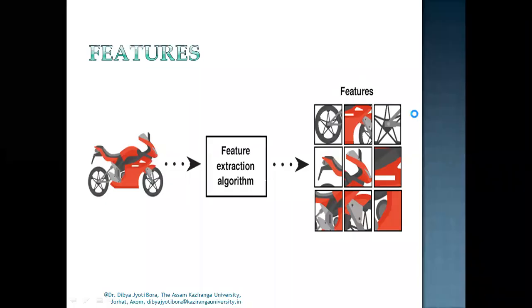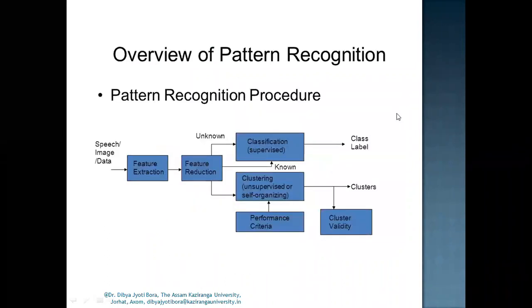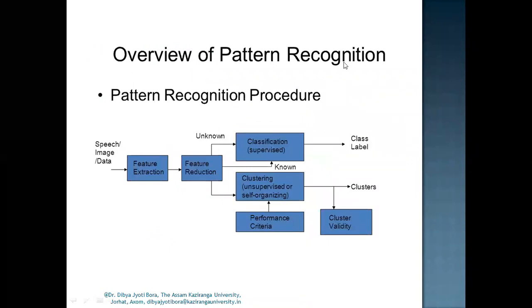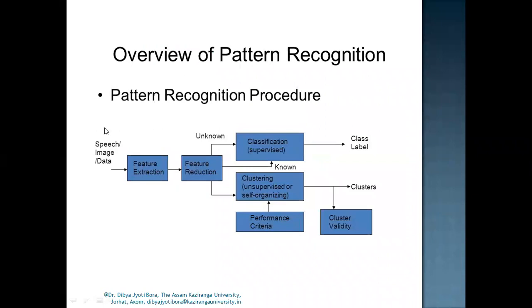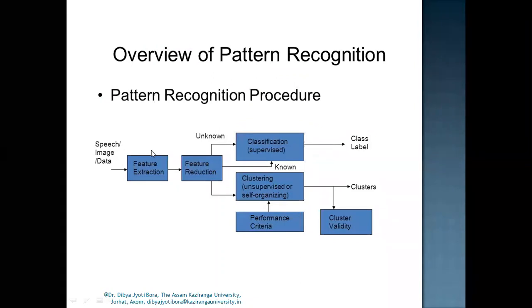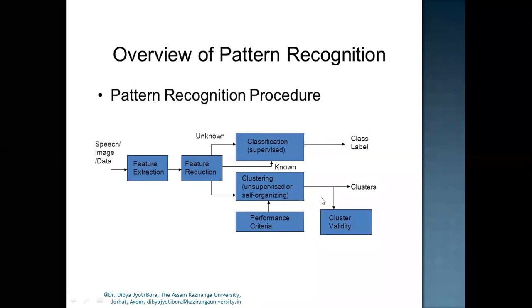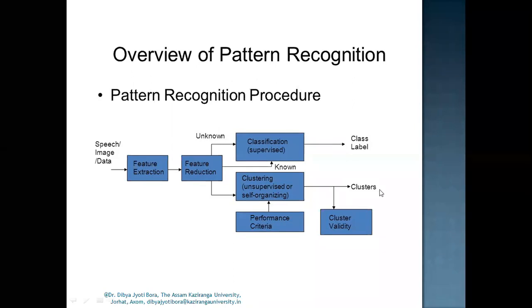So in the last lecture we have seen an overview of pattern recognition process, right? This means how the process of pattern recognition is carried out, what are the steps involved. Beginning from the input data, we have seen that speech, image, data - basically we are dealing with unstructured data. Then from there we are extracting the features, then feature reduction, then based on the known and unknown fact we go for classification or clustering. If it is classification we get the output as class level, and if it is clustering then we get the output as clusters.